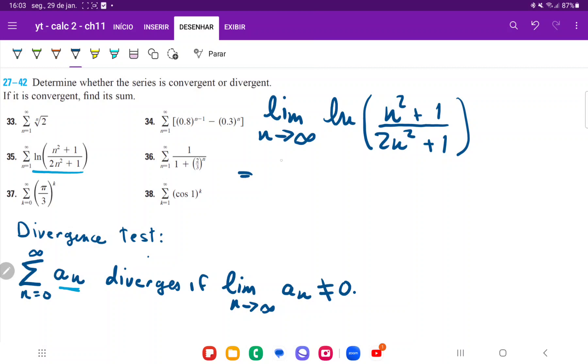So this is going to be equal to the limit as n approaches infinity of ln. We divide the top and the bottom by the highest power. So n squared divided by n squared is 1 plus 1 divided by n squared is 1 over n squared.